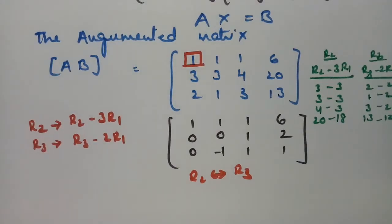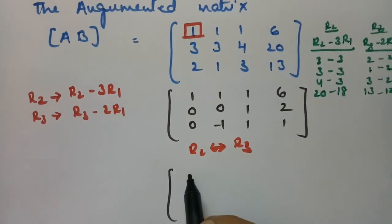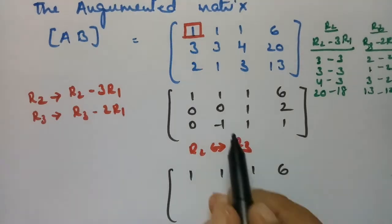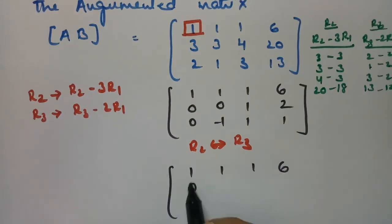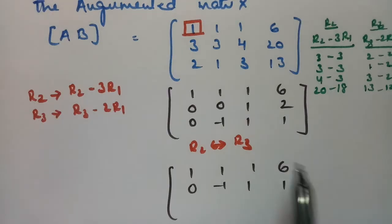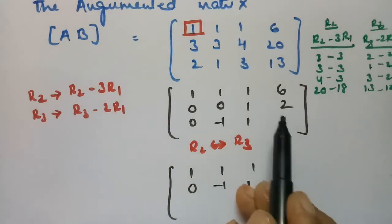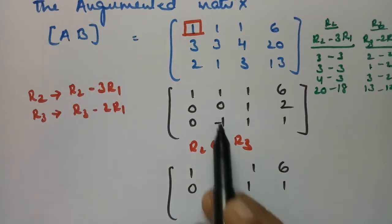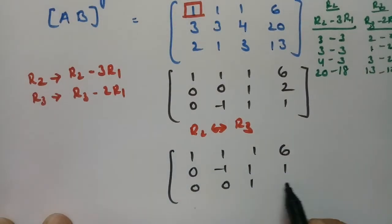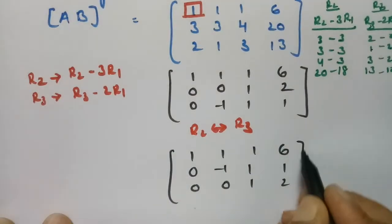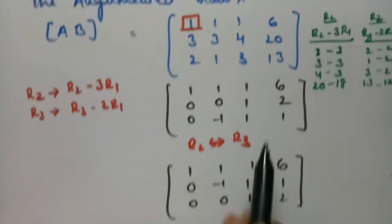The second diagonal element is needed, but here it is 0. So I am going to interchange row 2 and row 3. After the interchange, row 1 remains 1, 1, 1, 6. Row 2 becomes 0, -1, 1, 1, and row 3 becomes 0, 0, 1, 2. There is no need to make further elements zero as they are already 0.